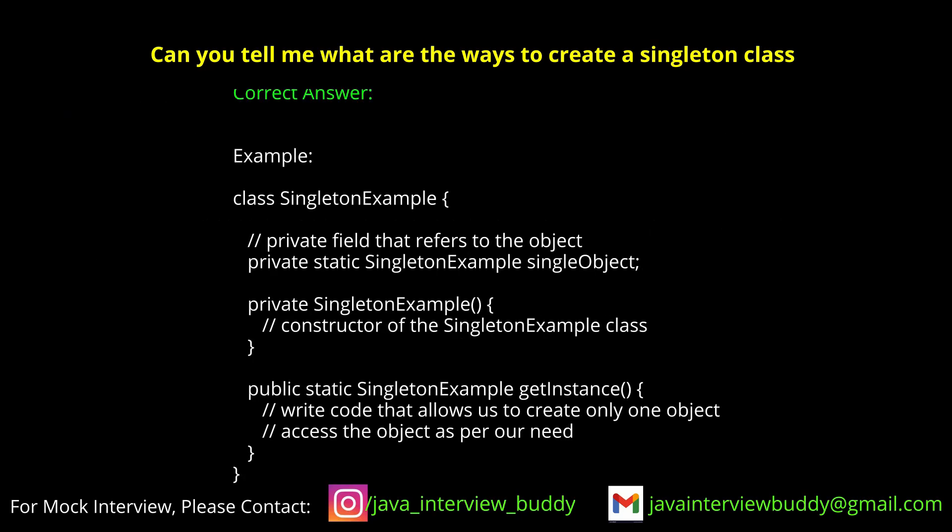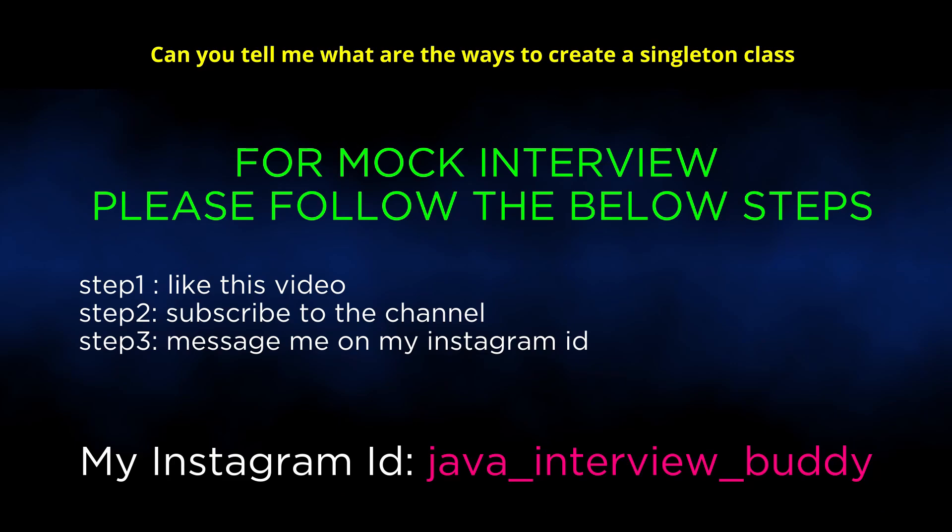What other things do you need to do? A static method that returns the type of the singleton class. In that method, I declare a private static singleton instance and check whether the object is equal to null. If it is null, I will create a new object — a new instance will be created. Otherwise, it will return the same instance. Those are the conditions.